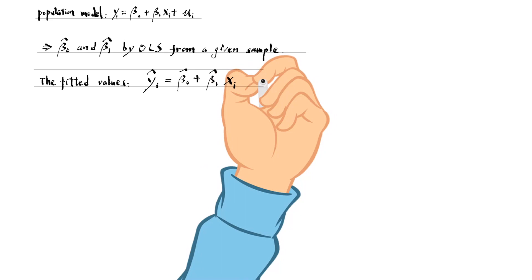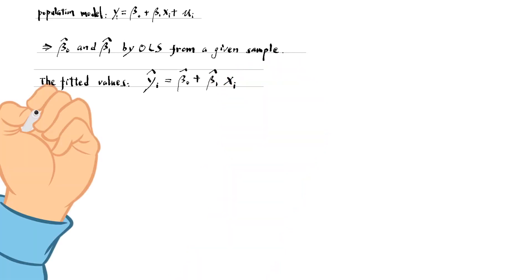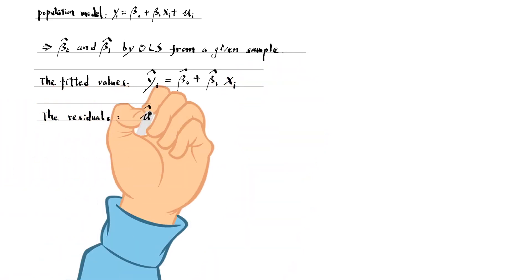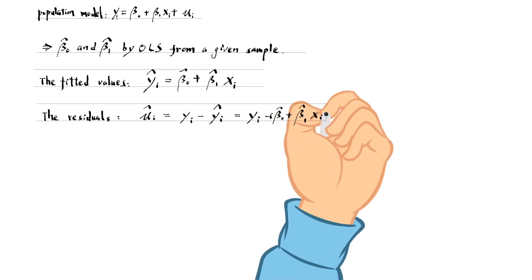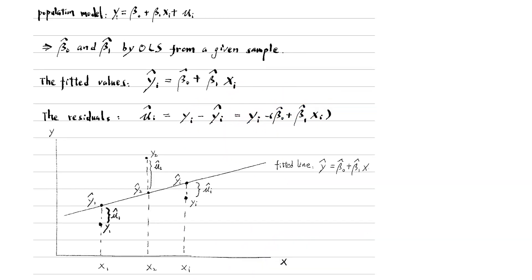Now, we have an actual value y and a fitted value y hat for each observation. The OLS residual associated with observation i, mu i, is the difference between the actual value yi and its fitted value yi hat.